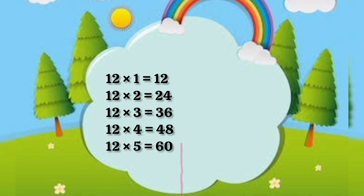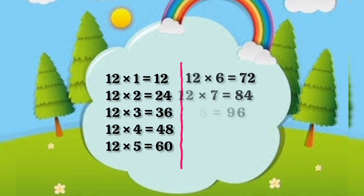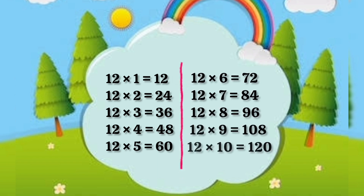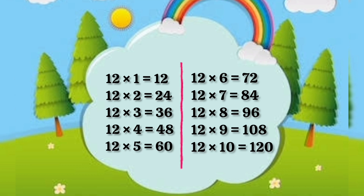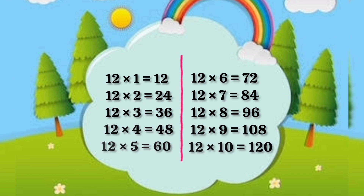12 6s are 72, 12 7s are 84, 12 8s are 96, 12 9s are 108, 12 10s are 120.